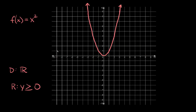Next we have f of x is equal to x squared, the quadratic parent function. It always runs through the origin at zero zero, then one one, two four, and three nine — and it's the same on the other side since it's a symmetrical parabola, running through negative one one, negative two four, and negative three nine. The domain is all real numbers and the range is y is greater than or equal to zero, since the graph touches the origin at y equal to zero.